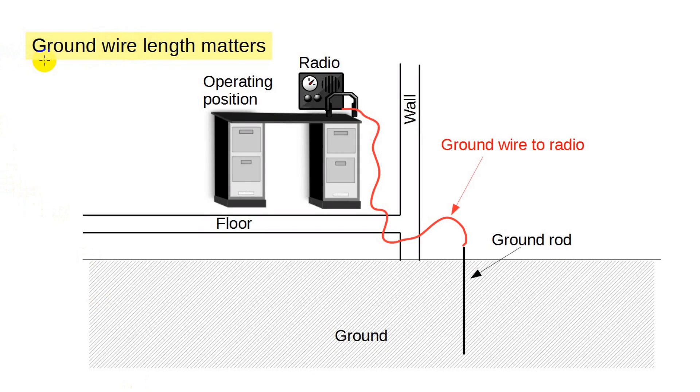Here's an example of how that would be done. Usually the station ground is an eight-foot ground rod driven into the earth as close to the station as possible. You can get these ground rods from Home Depot or similar stores. A short, highly conductive wire connects the ground rod to your station's single point ground.